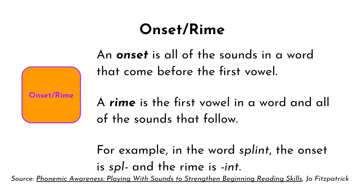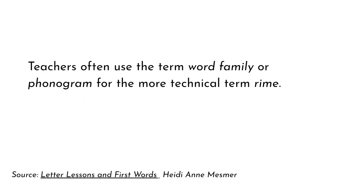An onset is all of the sounds in a word that come before the first vowel. Not all words have onsets—for example, at and in. A rhyme is the first vowel in a word and all of the sounds that follow. It is important to note that teachers often use the term word family or phonogram for the more technical term, rhyme.